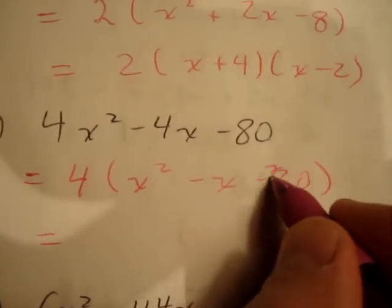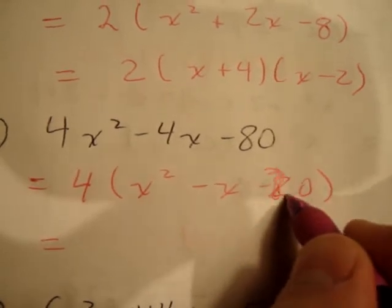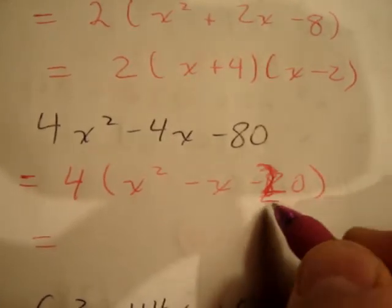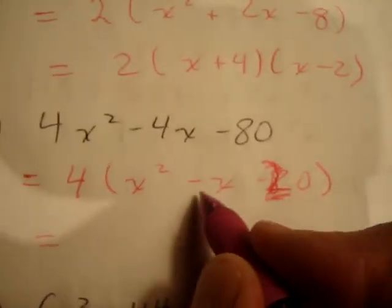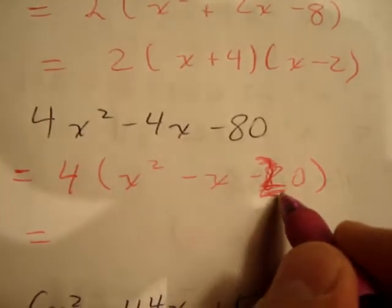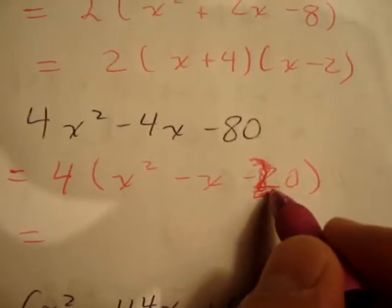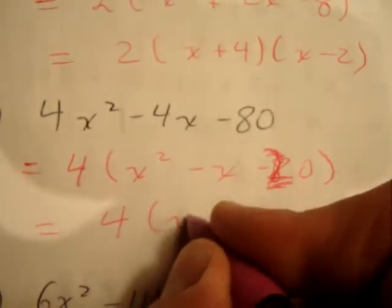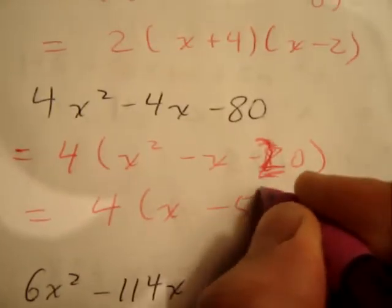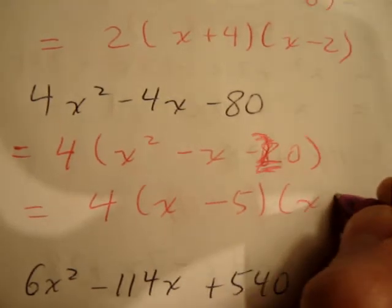I'm sorry, that's a 20, not 80. Sorry about that, folks. There should be a 20 in there. We want two numbers that add to -1 and multiply to -20. Those numbers are -5 and positive 4. We get (x - 5)(x + 4).